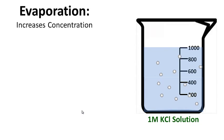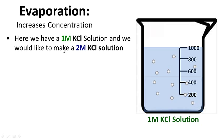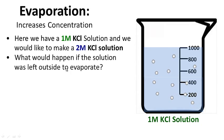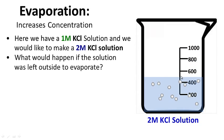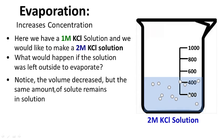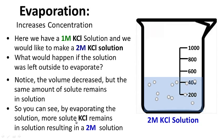Evaporation increases concentration. Here we have a one molar KCl solution with one thousand milliliters of water. We want to make a two molar potassium chloride solution. What would happen if the solution was left outside to evaporate? The water volume decreases from one thousand to five hundred milliliters. Notice the volume of solvent decreased, but the same amount of solute remains in solution. Therefore we now have a two molar potassium chloride solution — concentration increased from one molar to two molar by evaporation.